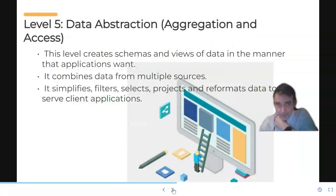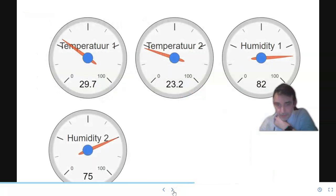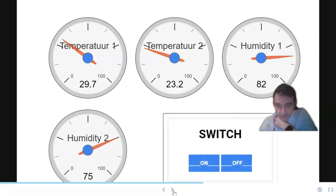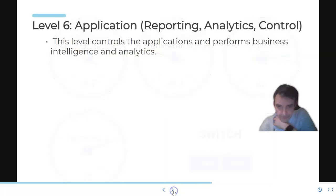Level 5: the data needs to be read by another application and create a nice view, so data abstraction needs to take place. Building a website which presents a nice view of the temperature and humidity in all places. A switch is also part of the view, to make it possible to put the heating on or off from a distance.